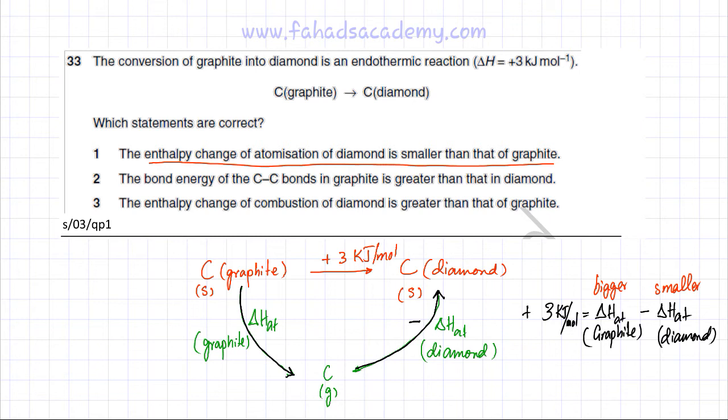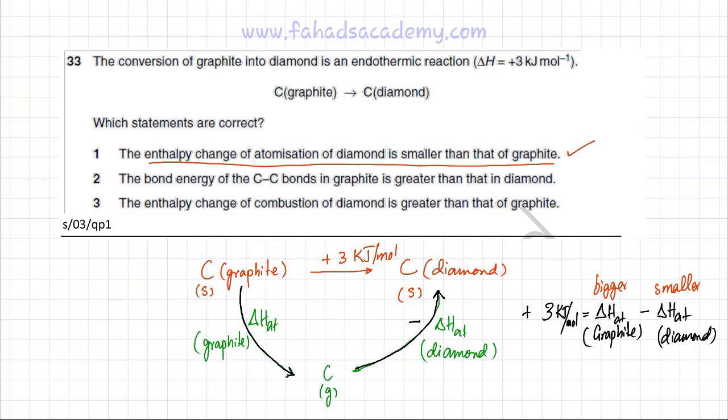So the first statement is correct: the enthalpy change of atomization of diamond is smaller than that of graphite. This looks perfectly correct.